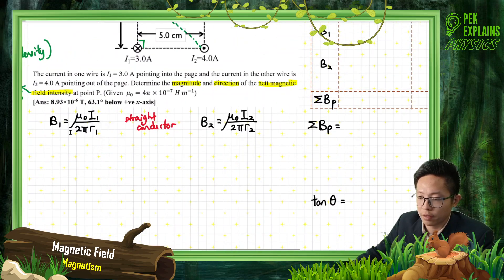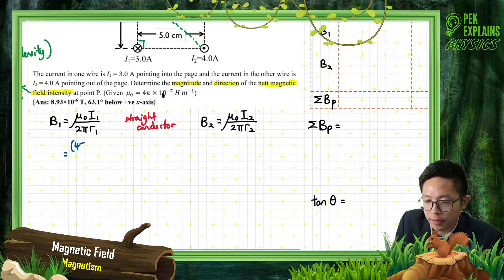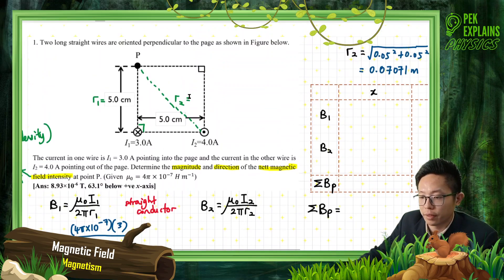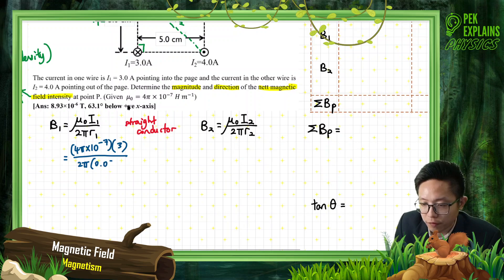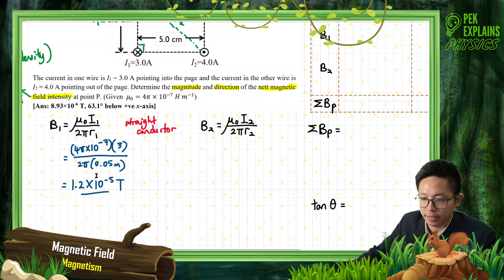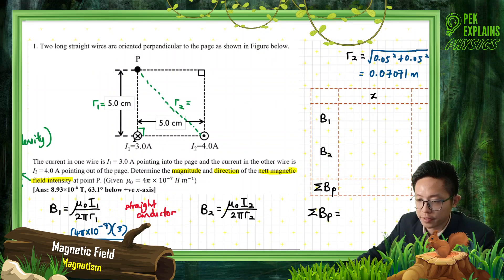Now let's calculate B1 and B2. For B1: μ₀ is 4π × 10⁻⁷, the current is 3 ampere, and the distance is 0.05 meter. After calculating, B1 = 1.2 × 10⁻⁵ Tesla. That is the magnetic field given by current I1 to point P, which is 5 cm away.